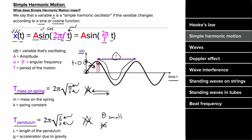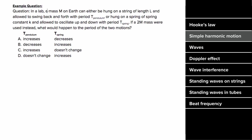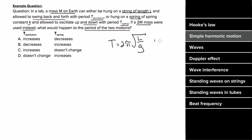Here's an example problem. A mass m on Earth can be hung on a string of length l to swing with period T-pendulum, or hung on a spring of spring constant k to oscillate with period T-spring. If a 2m mass were used instead of 1m, what would happen to the periods? The period of a pendulum doesn't depend on the mass, so the period of the pendulum would not change. The answer is D.